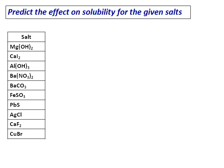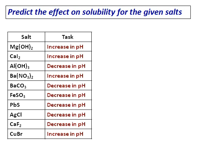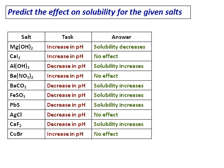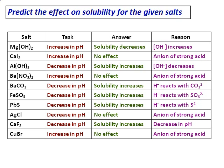Let's predict the effect of pH on solubility for given salts. For magnesium hydroxide with increasing pH: solubility decreases, because hydroxide ion concentration increases. For calcium iodide with increasing pH: no effect, since iodide is an anion of a strong acid. For aluminum hydroxide with decreasing pH: solubility increases, because hydroxide ion concentration decreases. For barium nitrate with increasing pH: no effect, as nitrate is a strong acid anion. For barium carbonate with decreasing pH: solubility increases, because H⁺ reacts with carbonate ion, removing it from solution.